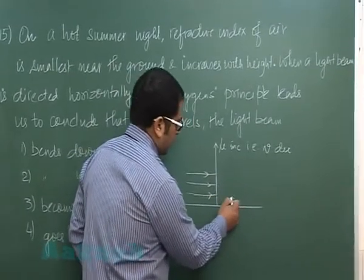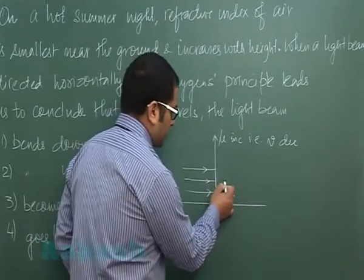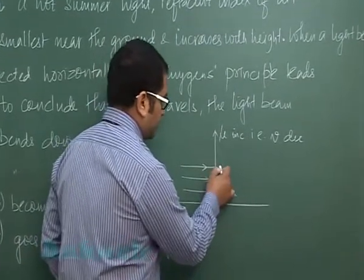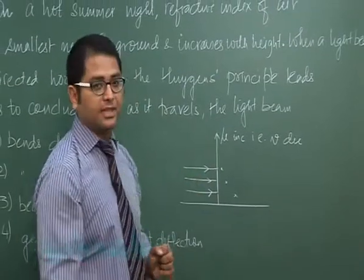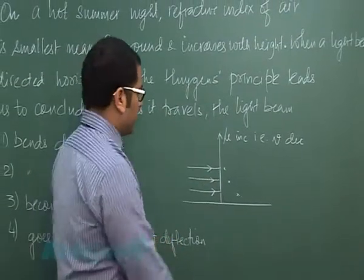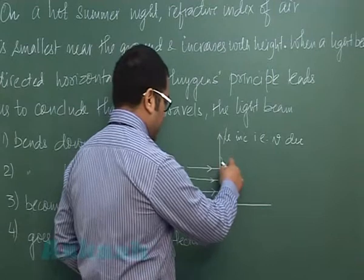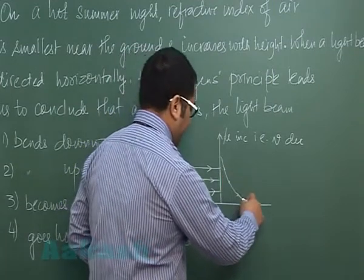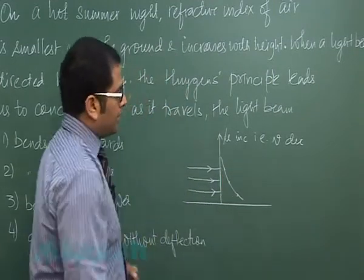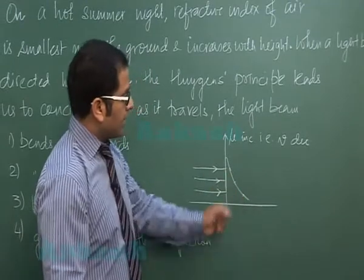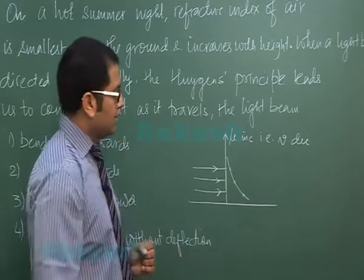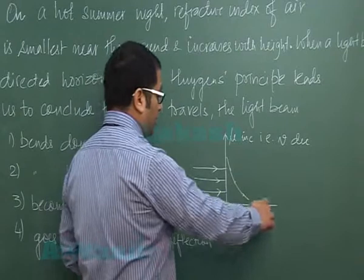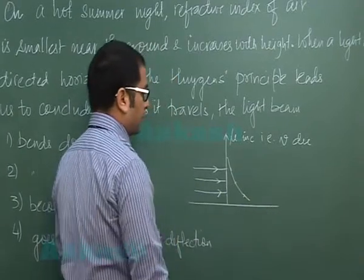But by the time this disturbance reaches here, this disturbance would have reached only here and this would have reached a lesser distance because the speed is decreasing. So if we connect all this point, this becomes the secondary wavefront, means all these particles are in same phase. So now if this is the wavefront, we know energy travels in a direction perpendicular to that.